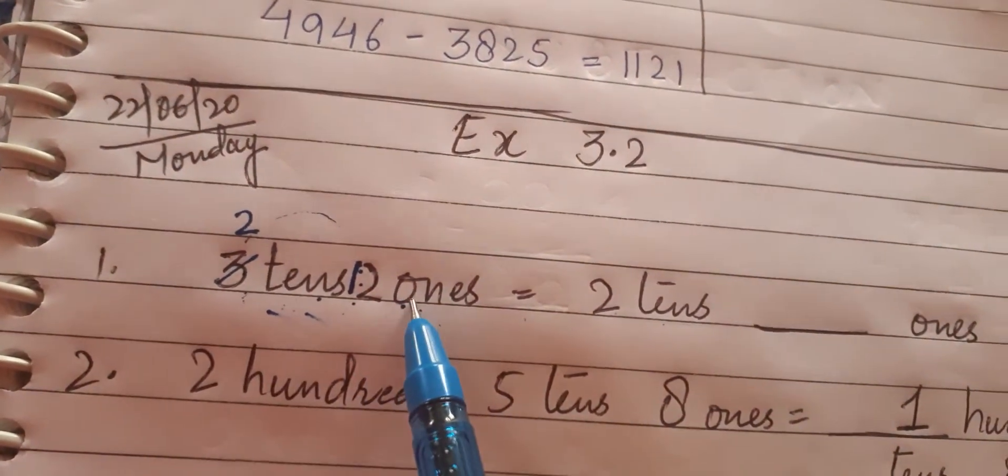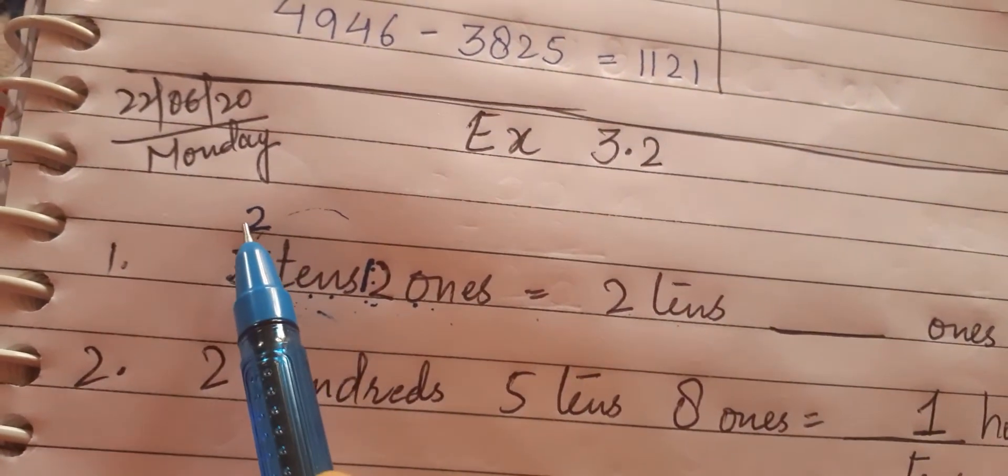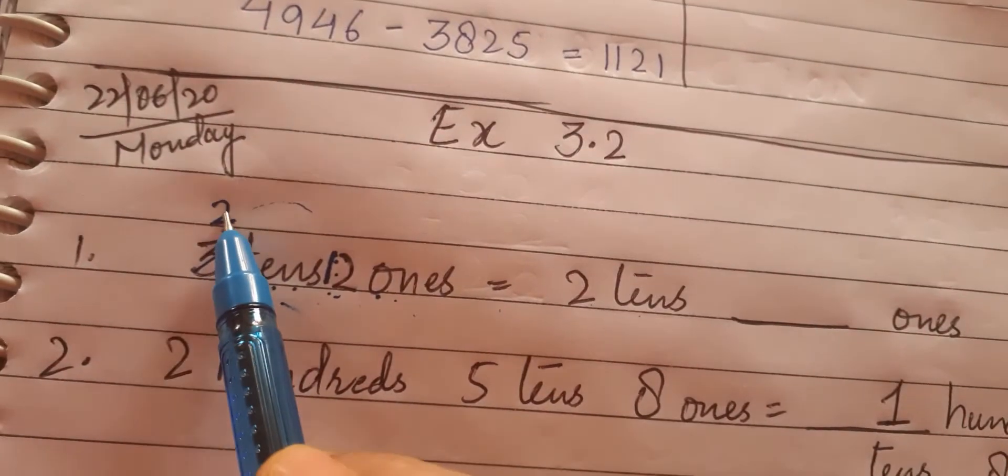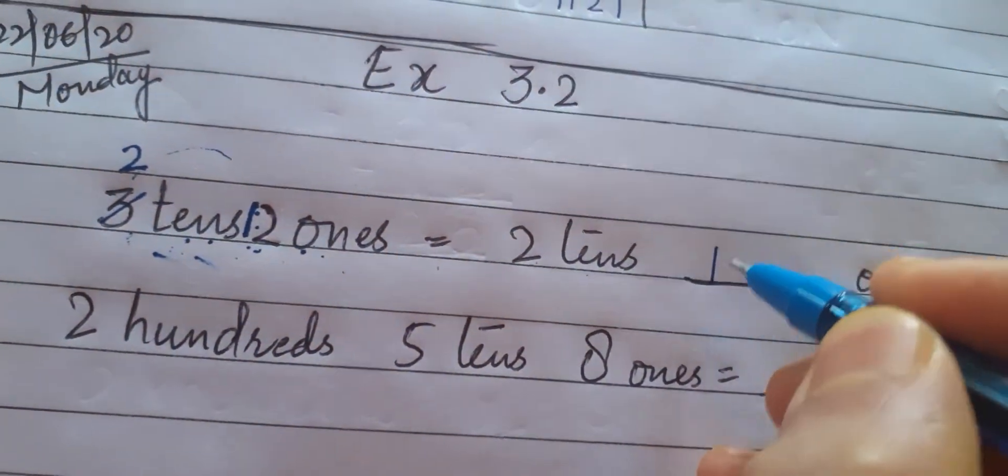So we are actually borrowing. Two ones has borrowed one number from 3 tens, so 2 ones has become 12 ones and tens place has become 2 tens. So the answer is 2 tens and 12 ones. The answer is 12.